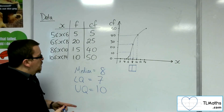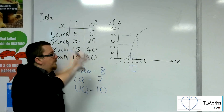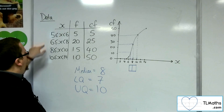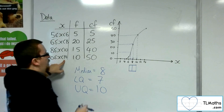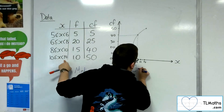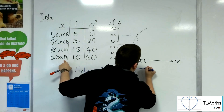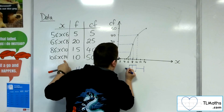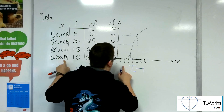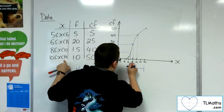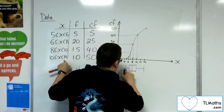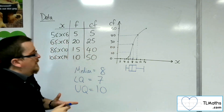For the whiskers, we draw them from 5 up to 14, because those are the furthest values we know about from the data groupings.